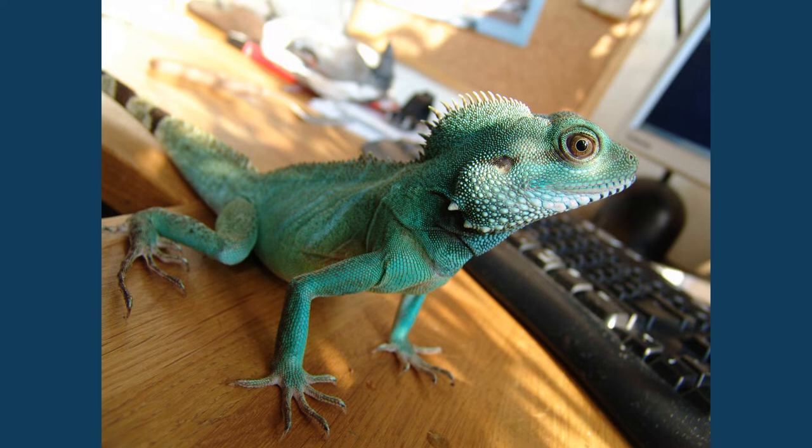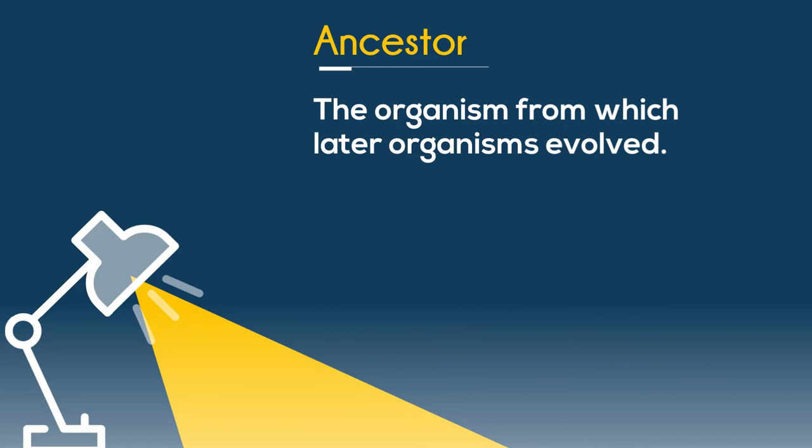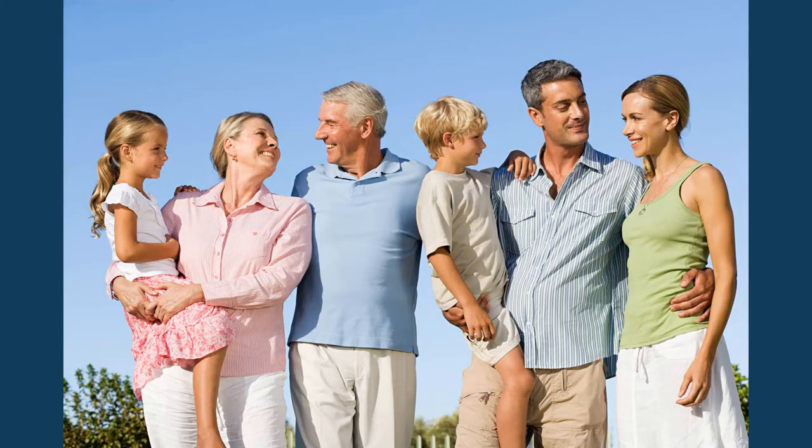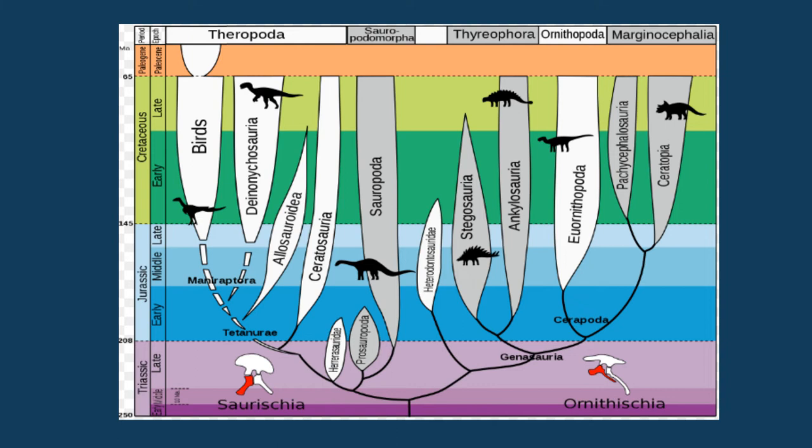Next, we have ancestor: the organism from which later organisms evolved. And here is a picture of some ancestors — you have a couple of generations of families. Hopefully you get the point of ancestor.